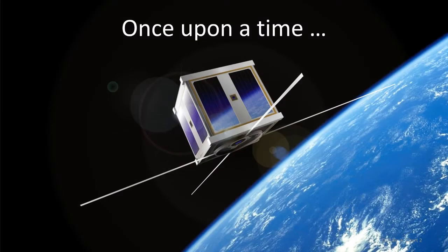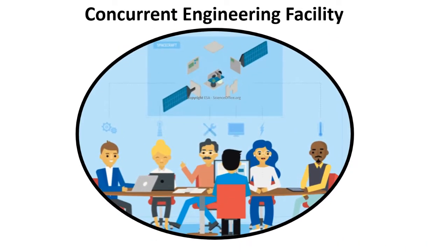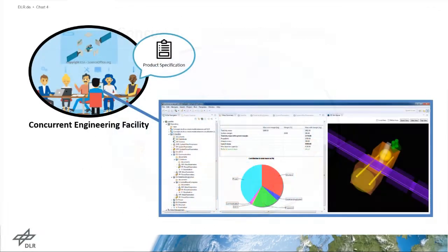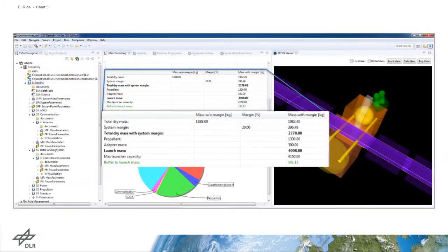Let's start with our motivating scenario. In a spacecraft design mission, engineers from multiple disciplines are working concurrently. They use a model-based system engineering tool. Real-world objects are represented as building blocks, which one can adjust their properties and connect to other building blocks.